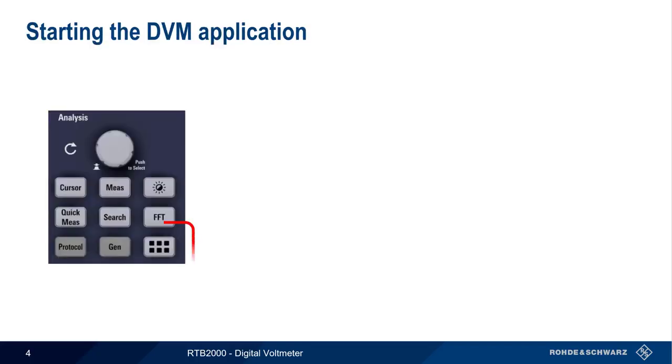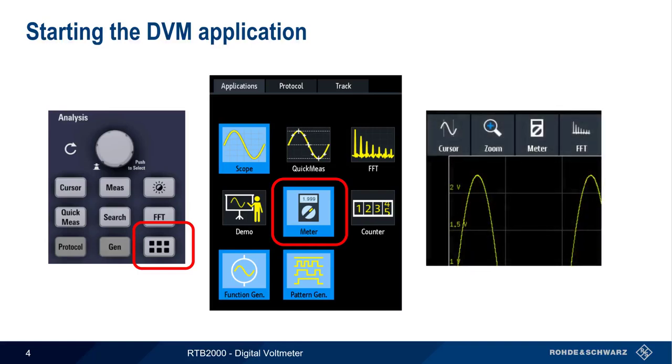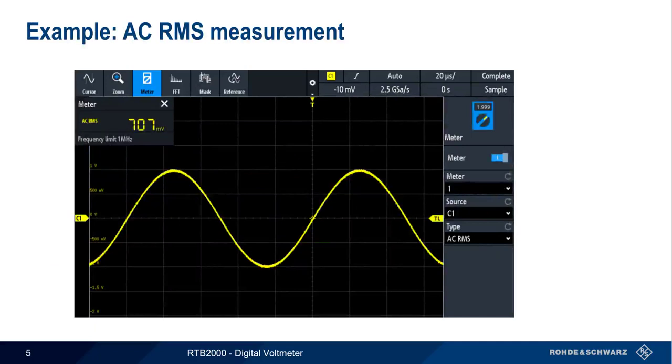The digital voltmeter can be started by pressing the application button on the front of the RTB and then selecting meter from the list of applications. Another way of starting the DVM application is directly from the RTB's toolbar menu.